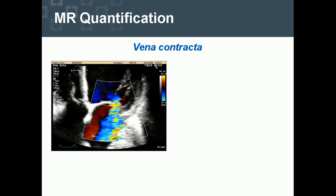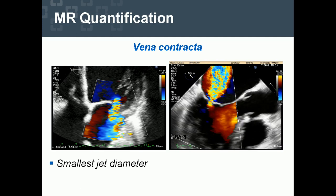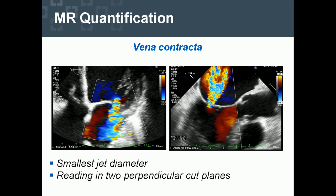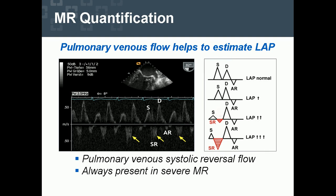The vena contracta: one example in the four-chamber view using zoom mode — the smallest jet diameter is measured. The same applies in the TEE image. Reading in two perpendicular cut planes is recommended; ask for zoom mode to be precise. Systolic reversal flow helps estimate left atrial pressure and also the severity of mitral regurgitation — there is no severe mitral regurgitation without systolic reversal flow. Search in different pulmonary veins if you miss it.